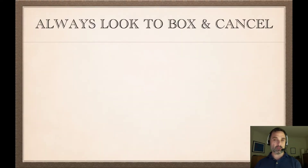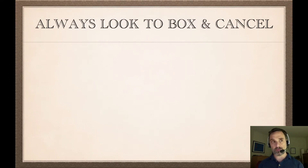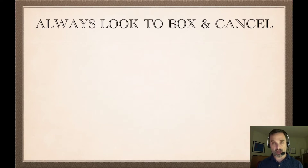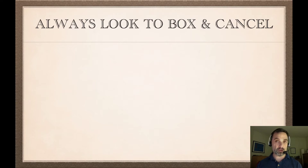What you always want to be remembering is: you're always looking to box and cancel. That's your ultimate goal — to box and cancel the show line. And if you're working in a sub-derivation, your goal is always to box and cancel that sub-derivation to get you back to the point where you can box and cancel the main line. Always think: can I box and cancel directly? Have I got what I'm trying to show, or have I got a contradiction?